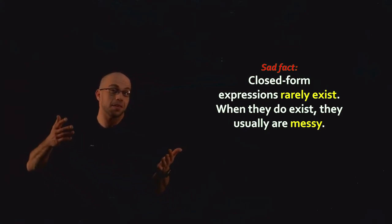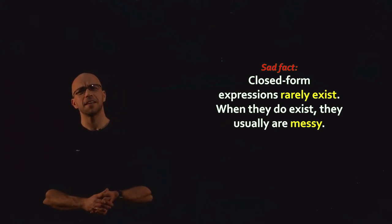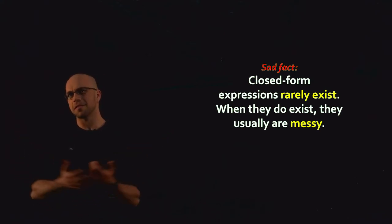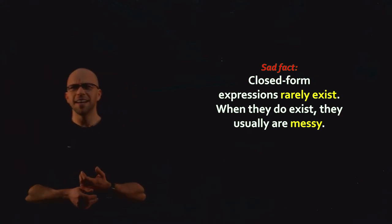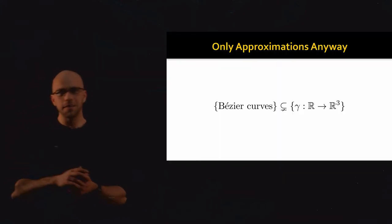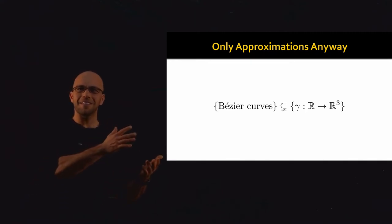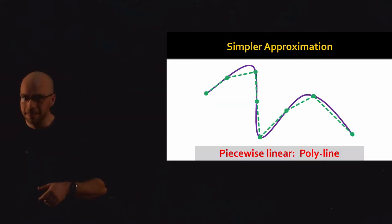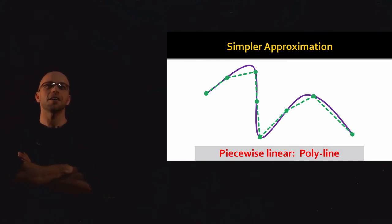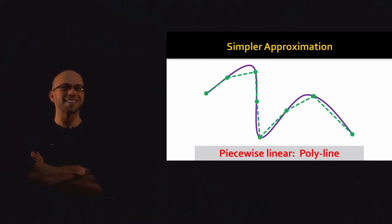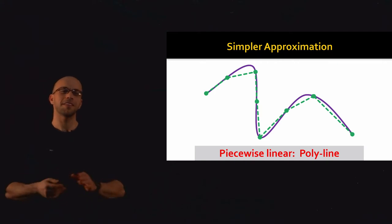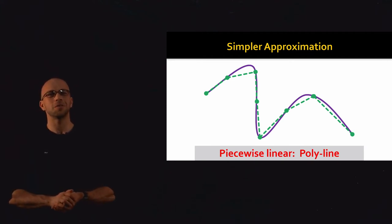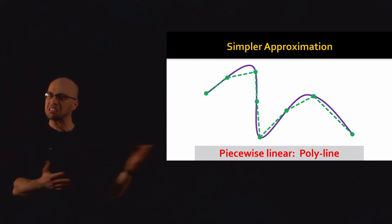For shape analysis, Bezier curve representations are not particularly useful. Instead, maybe we just tessellate our curve with something simpler like a bunch of line segments. Initially that feels dirty, but the reality is that even though we like Bezier curves for computer graphics, the set of Bezier curves is still much smaller than the set of all possible curves — these are all just approximations anyway. So in this class, we're going to work with much simpler objects: polylines. A polyline is a piecewise linear representation of a curve — just a sequence of points connected by line segments.